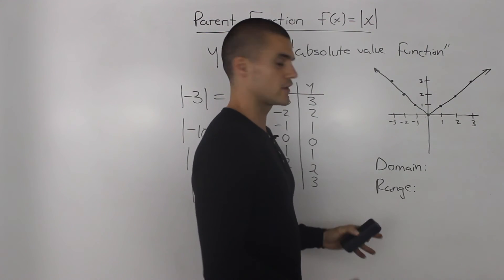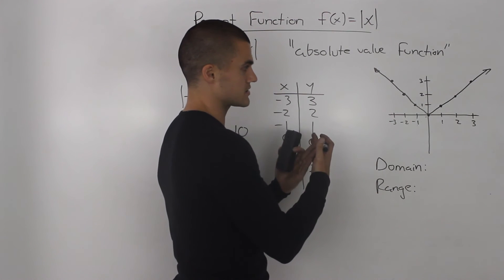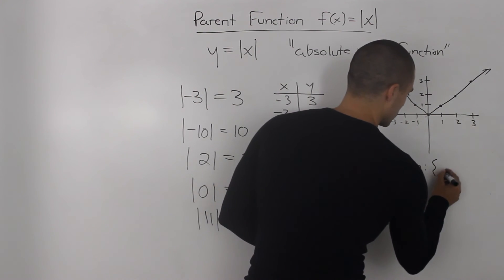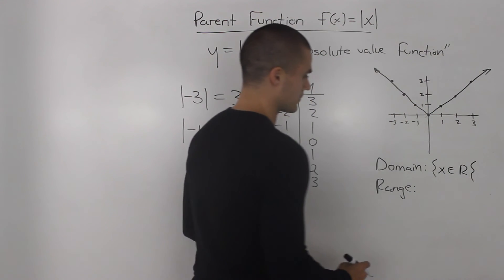To conclude the video, let's discuss what the domain and range is of the absolute value function. So the domain, the x values, there is no restriction on them. They can be anything. So the x values, x can be an element of real numbers.